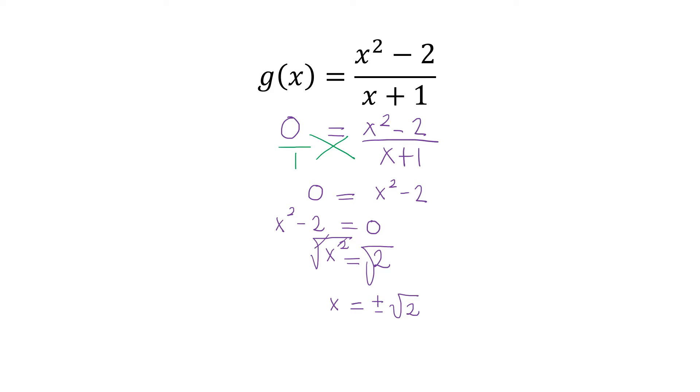Therefore, the zeros of the function g(x) are positive square root of 2 and negative square root of 2.